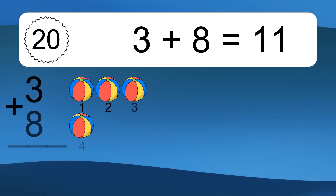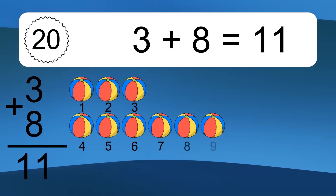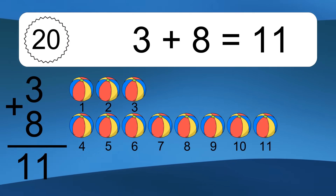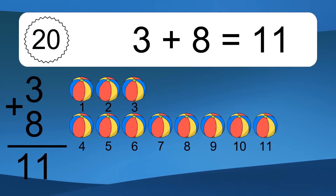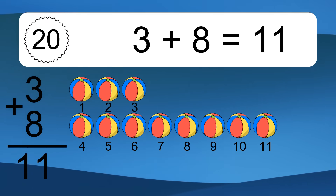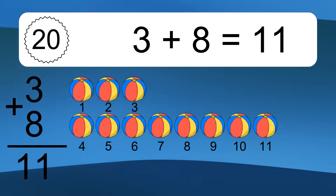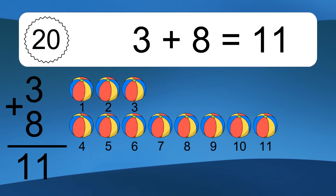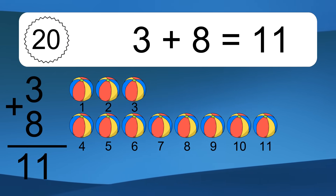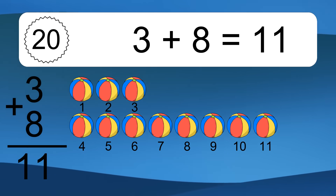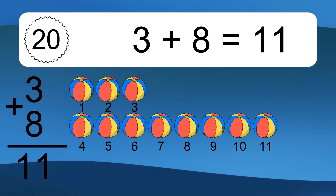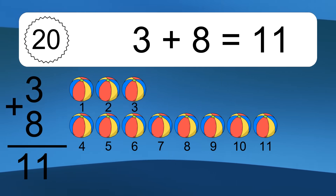3 plus 8 equals what? 3 plus 8 equals 11. Let's count it: 1, 2, 3, 4, 5, 6, 7, 8, 9, 10, 11.